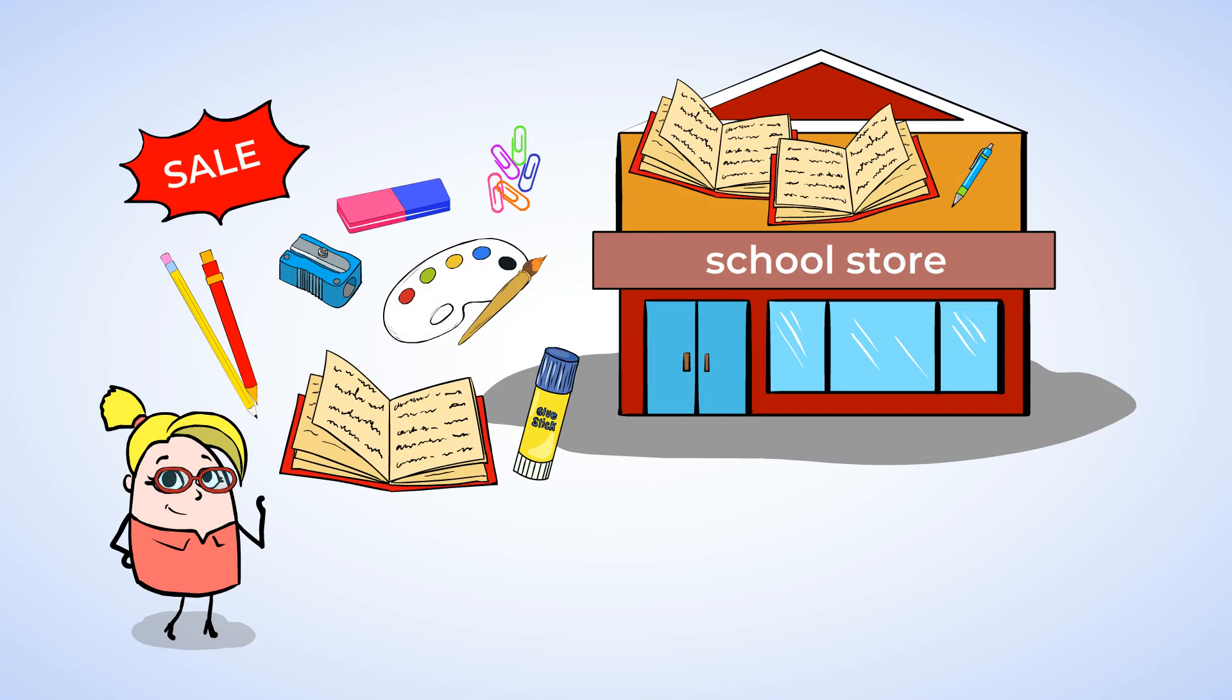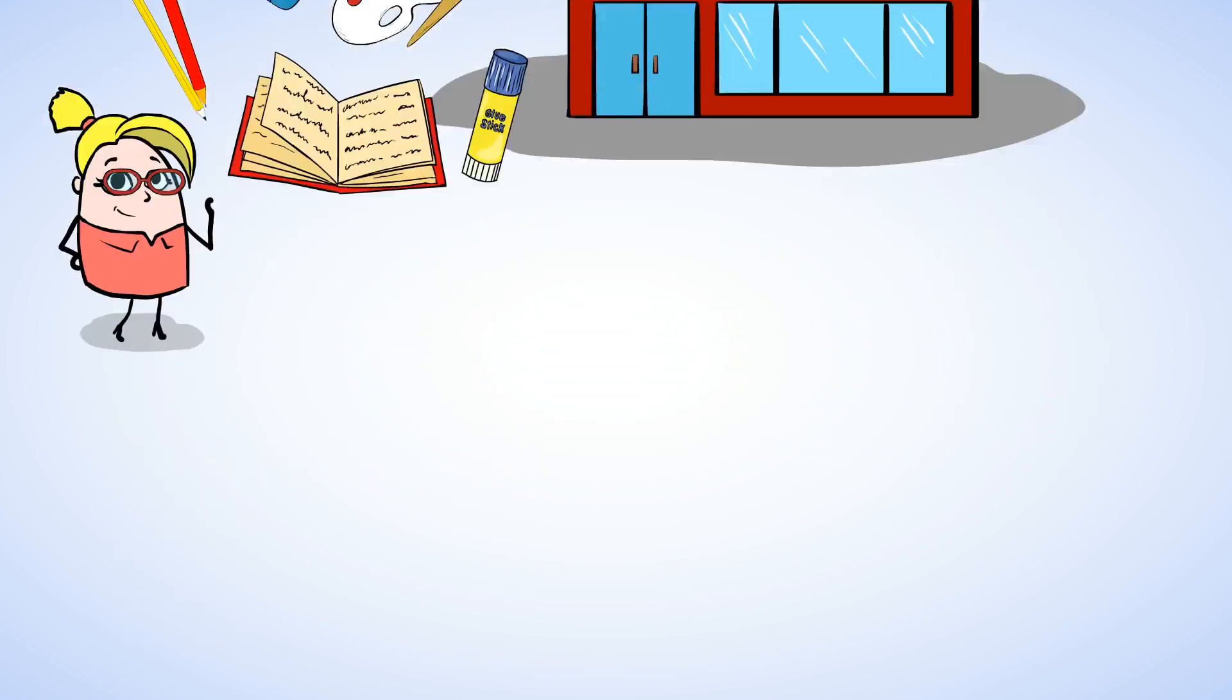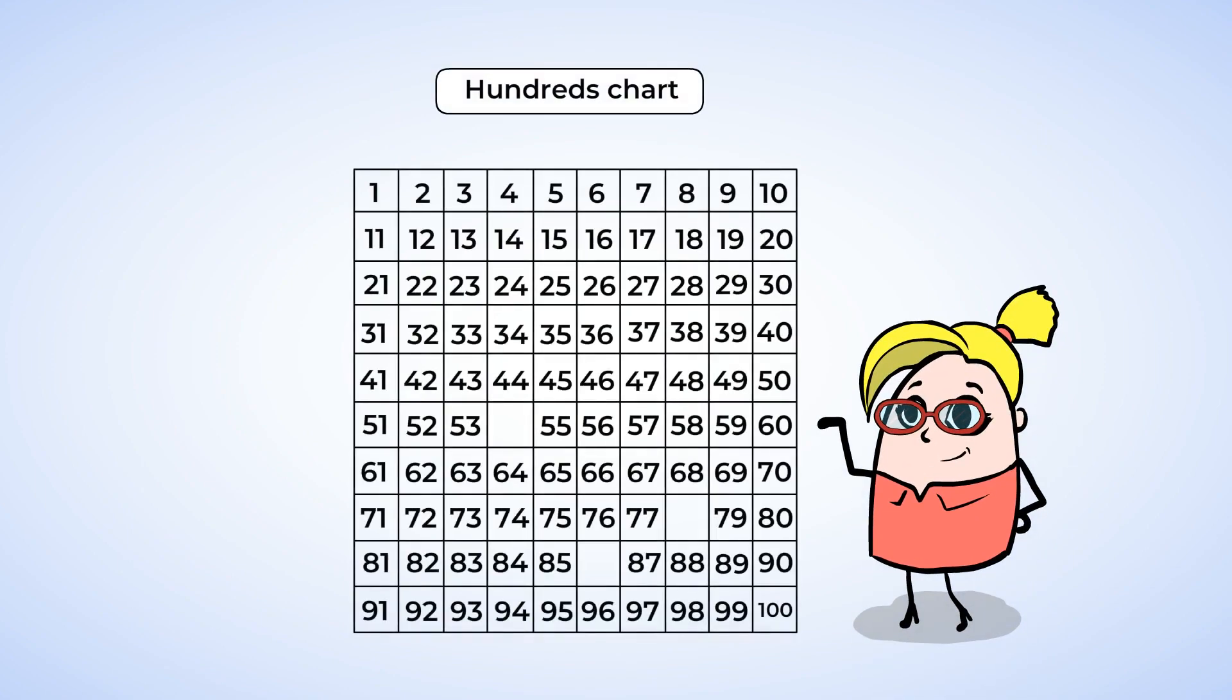But first, maybe it's a good idea to review how to count using a hundreds chart. A hundreds chart has the numbers from 1 to 100. These are the rows on the hundreds chart. Each row has 10 numbers.